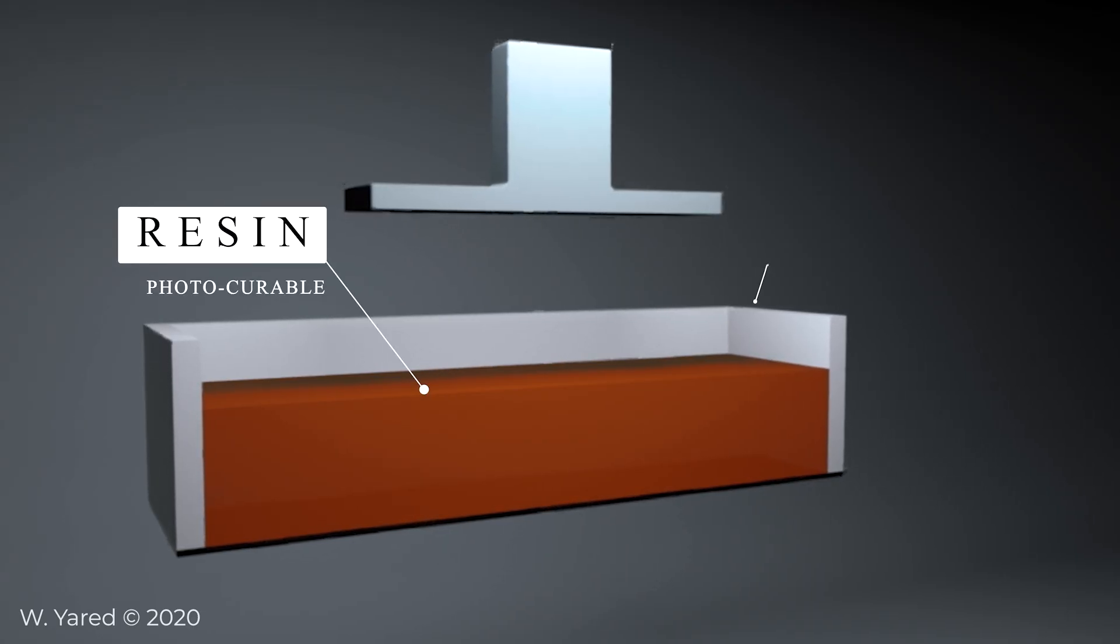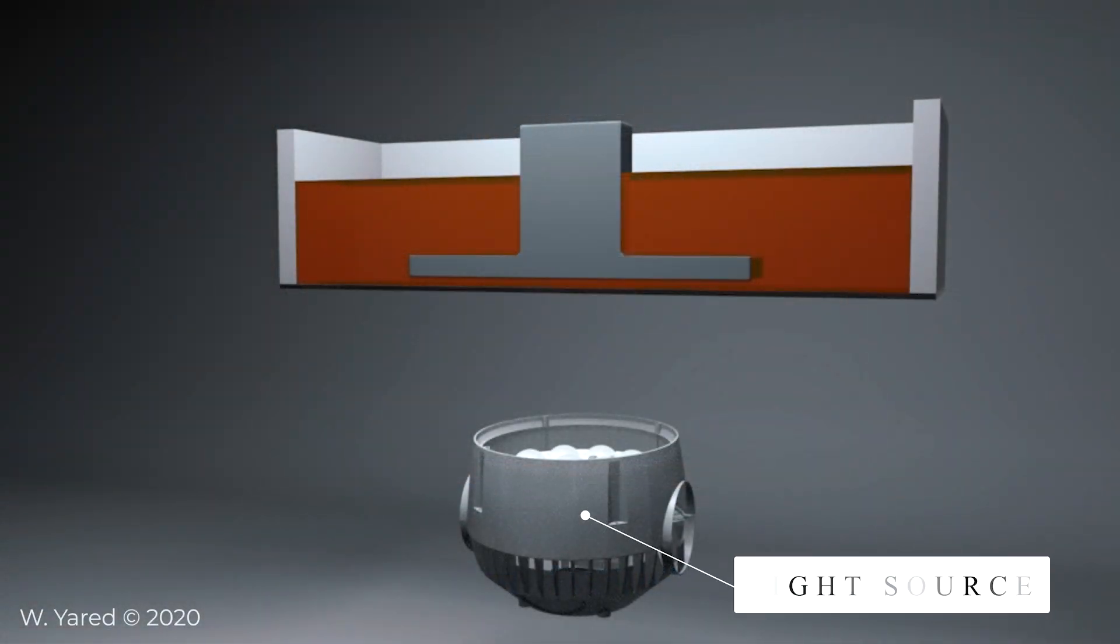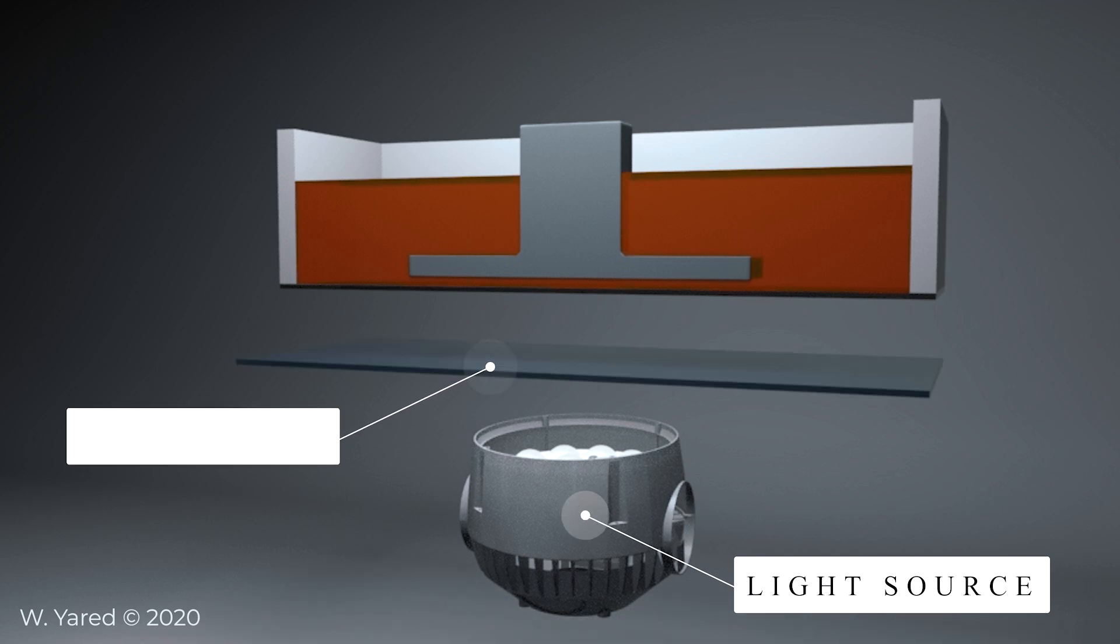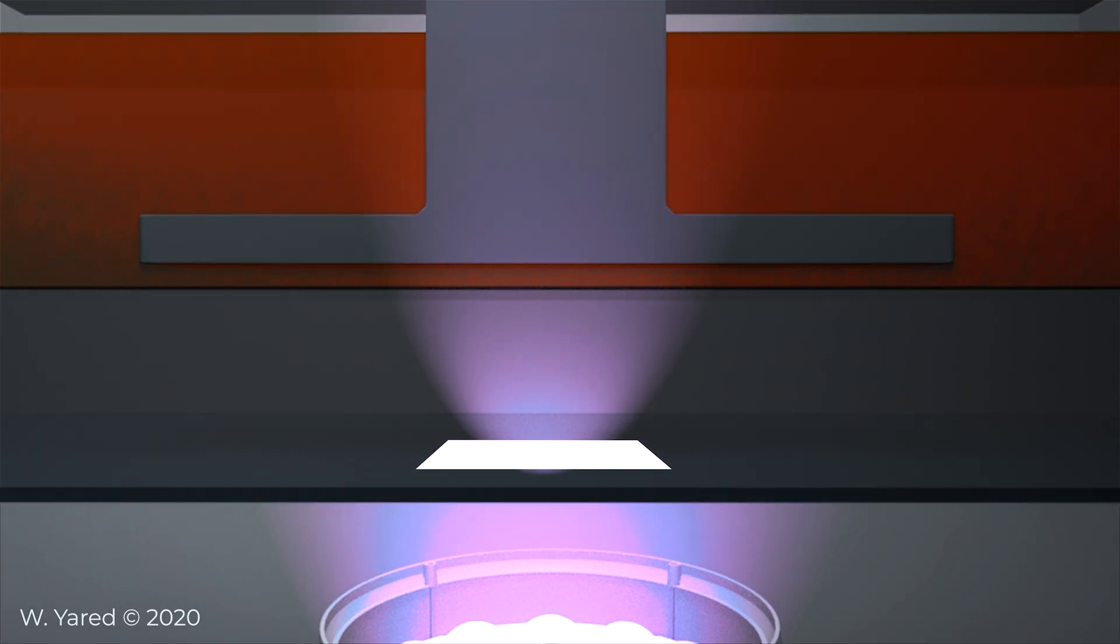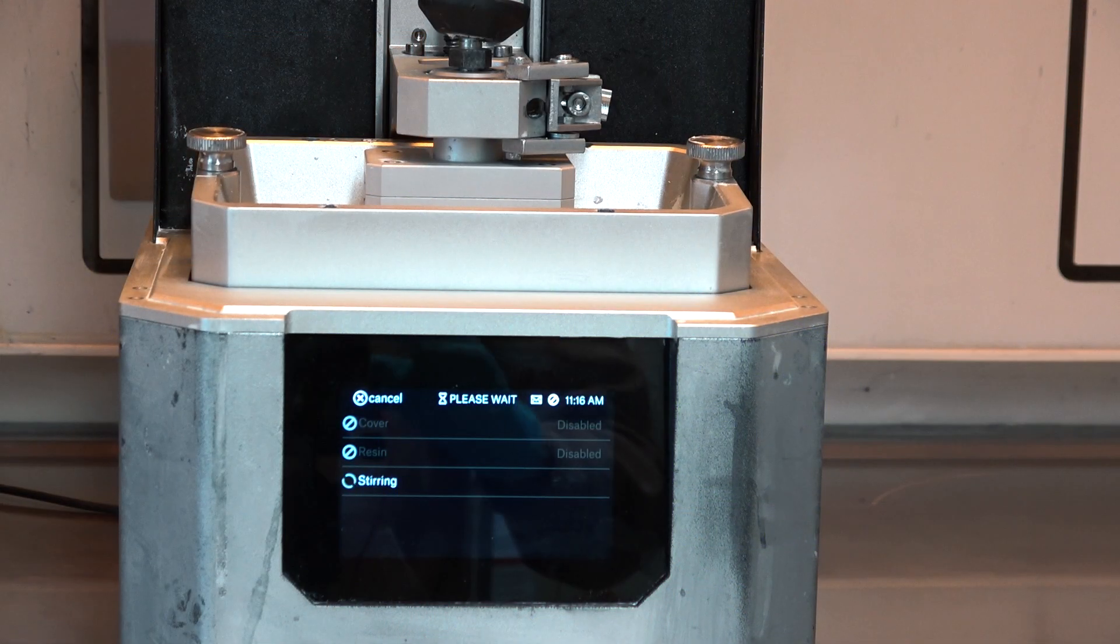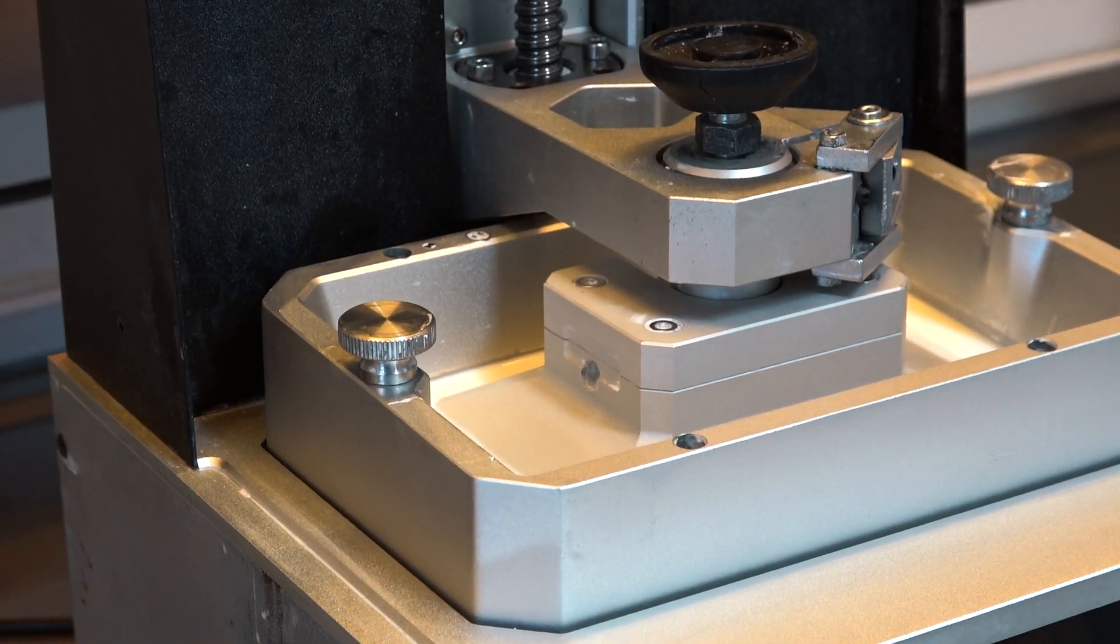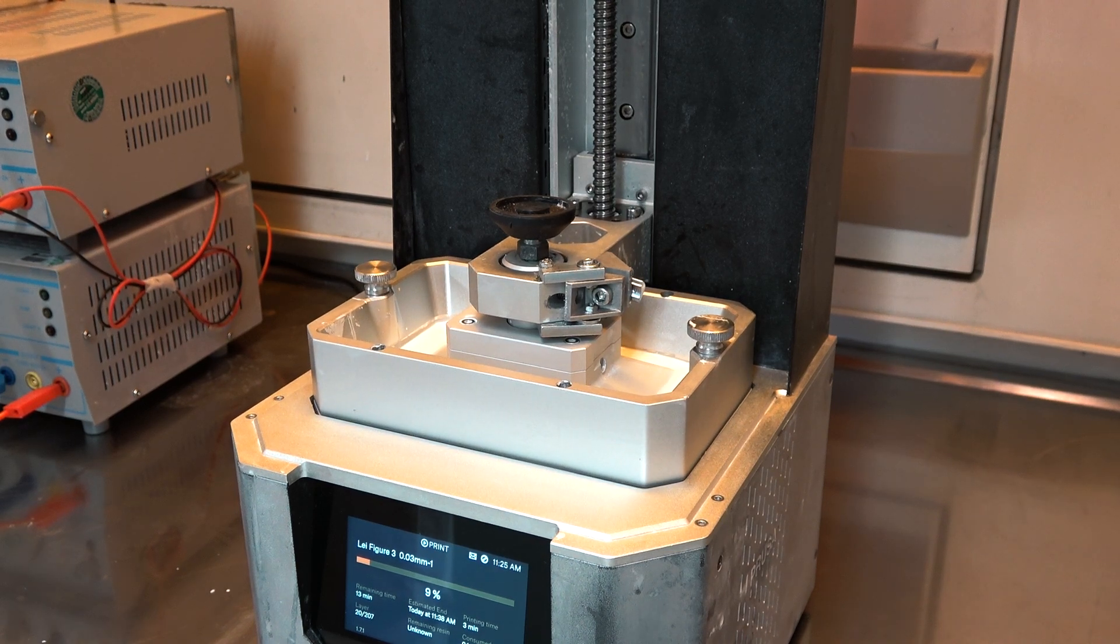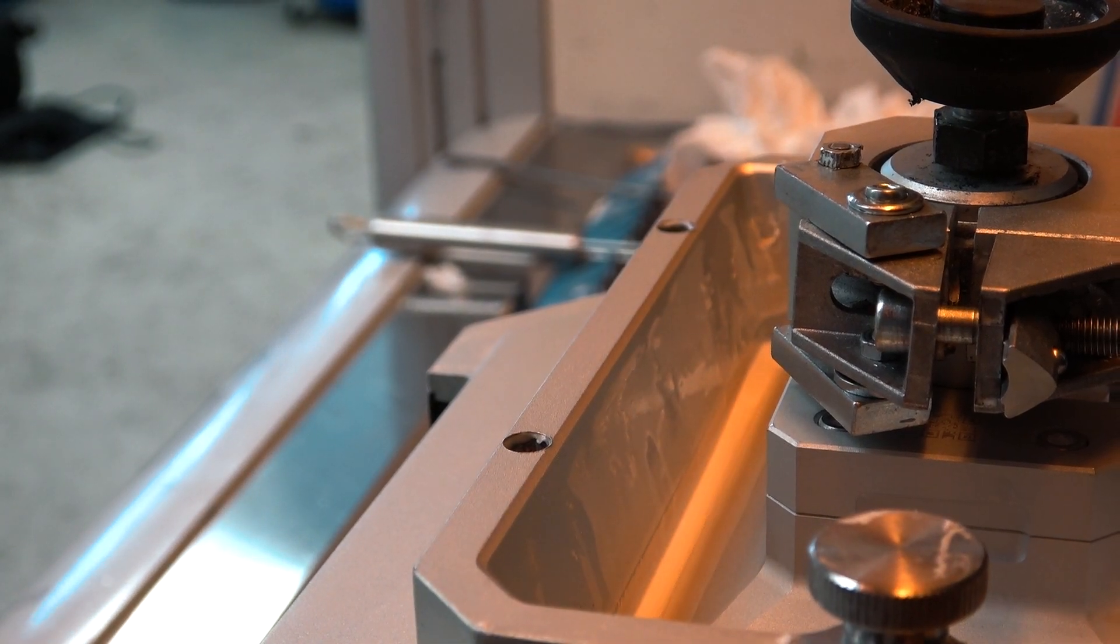Now, the build platform is lowered by a fraction of the layer height, and a projector is used to expose the photopolymer resin to blue light. This blue light causes the resin to solidify or polymerize. In order to selectively mask the blue light, an LCD screen is usually used. The LCD screen consists of an array of tiny pixels, each capable of being individually controlled to block or transmit the light.